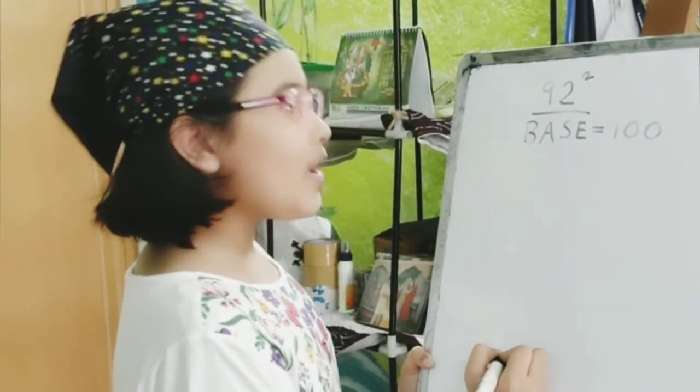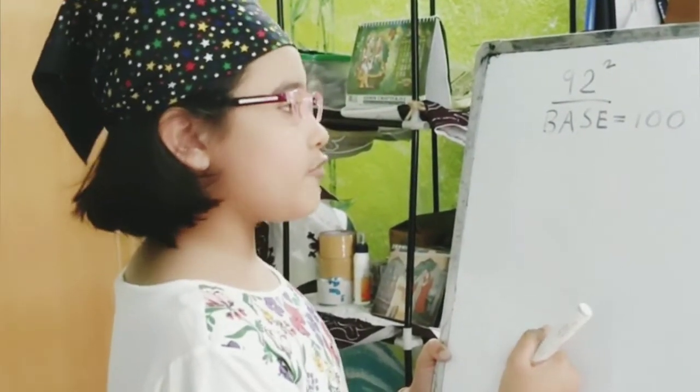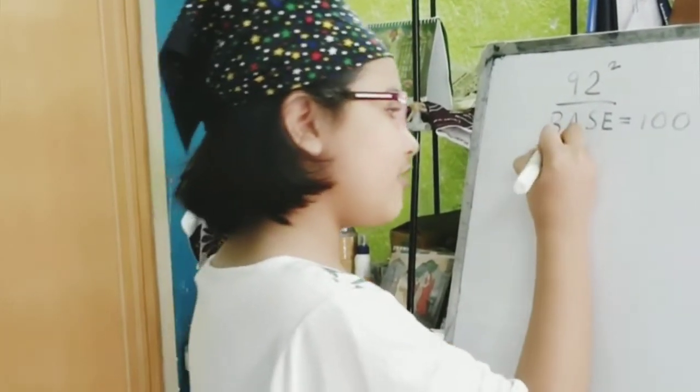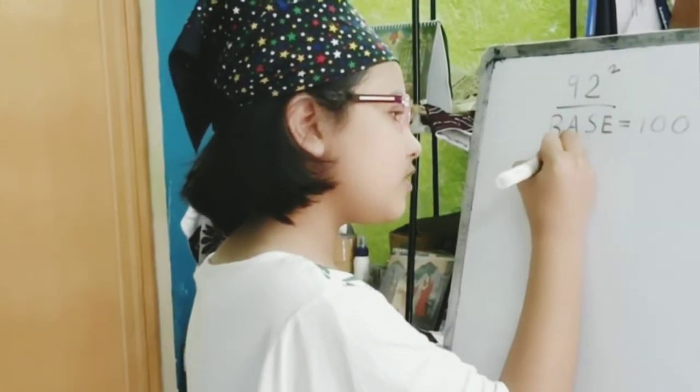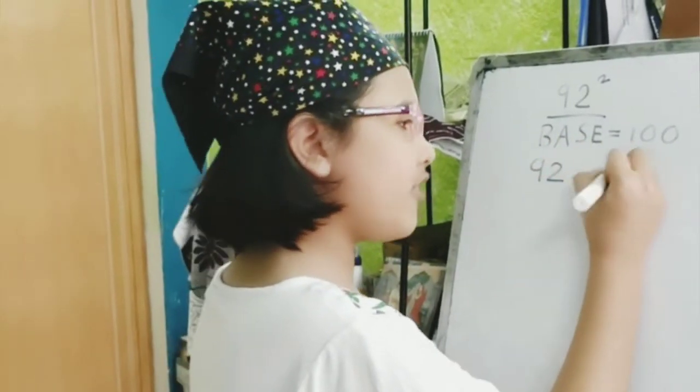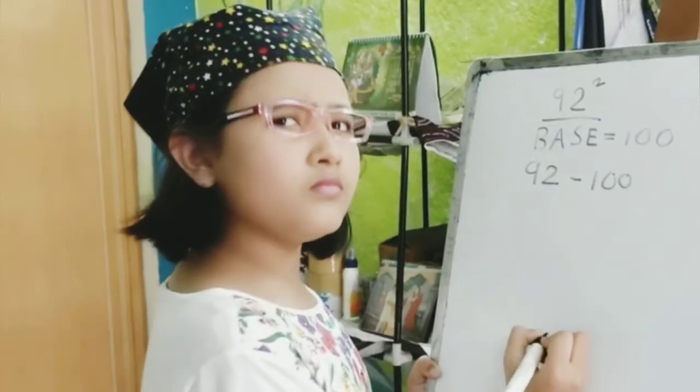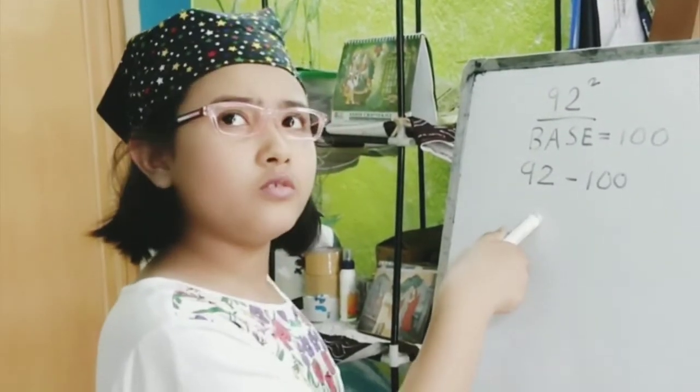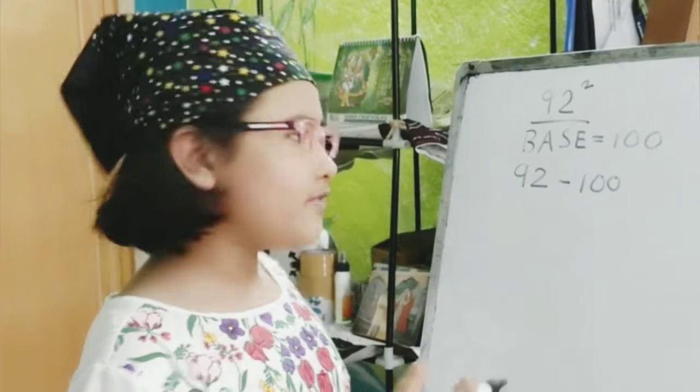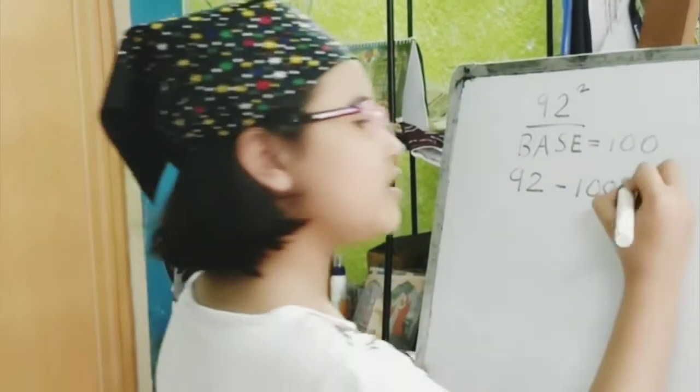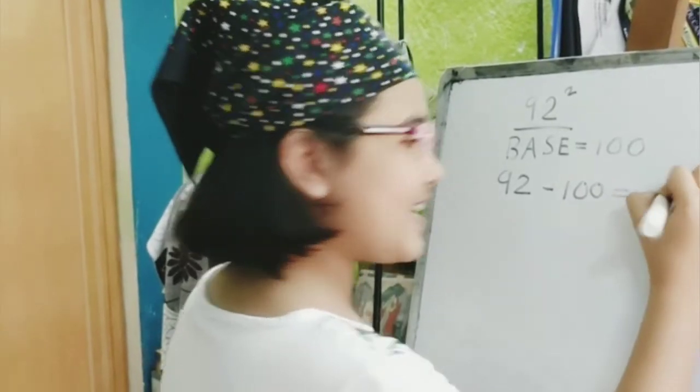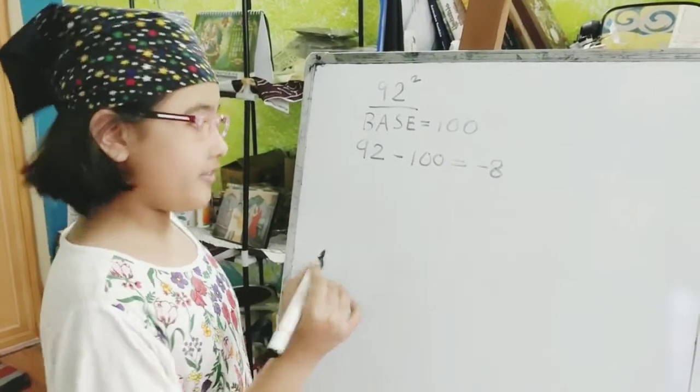So, we have to subtract the base number from 92. So, we write 92 minus 100. Now, as we know, we have to subtract the base number from 92. So, we write 92 minus 100. So, we write minus 8. So, we write minus 8.